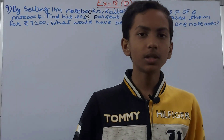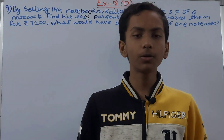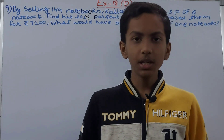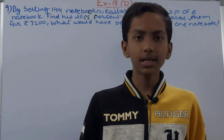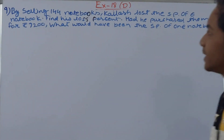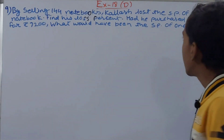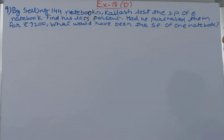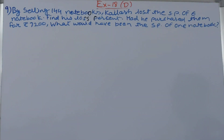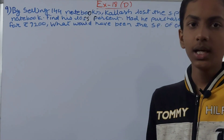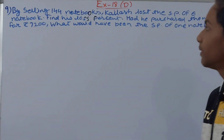Hello friends, welcome back to my YouTube channel 'Lock Your Learning'. In this video we are going to solve ICSE Mathematics Class 7, Chapter 18: Percentage and its Applications, Exercise 18D, Question 9. The problem is: by selling 144 notebooks, Kailash lost the selling price of 6 notebooks. Find his loss percent. Had he purchased them for Rs. 7200, what would have been the SP of one notebook?